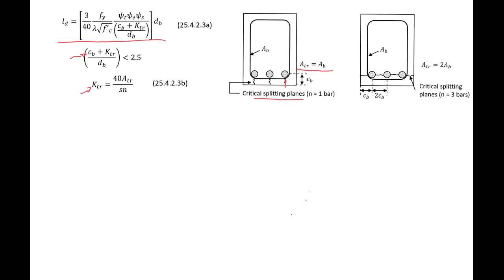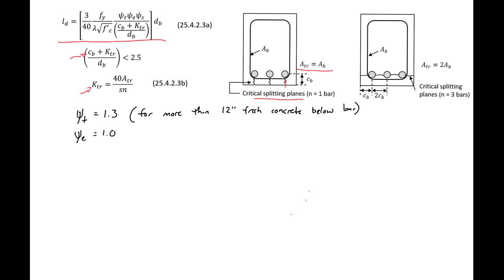First our factors. We still have top bars, so our top bar factor ψt is 1.3 — this applies where we have more than 12 inches of fresh concrete below the bar. Our epoxy coating factor ψe equals 1.0, our splitting factor ψs equals 1.0 for number seven bars and larger, and our lambda equals 1.0 for normal weight concrete.